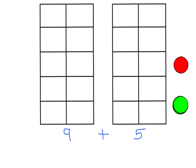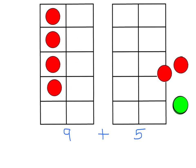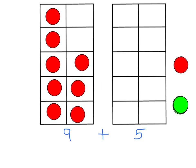We're going to put some counters on the 10 frame to show what 9 plus 5 would look like. We're going to show 9 with the red counters and put those all over here on this 10 frame. And then we're going to show 5 with the green counters.